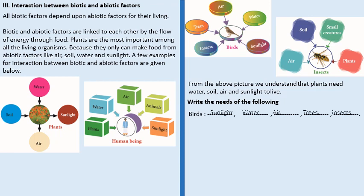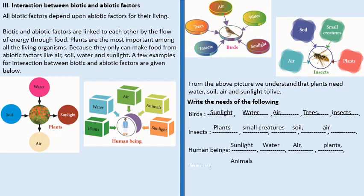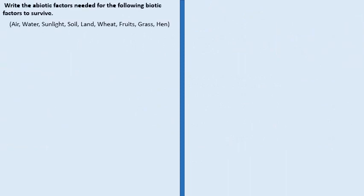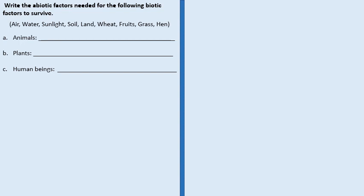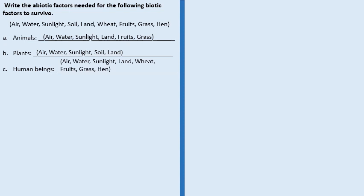Write the needs of the following. Birds use sunlight, water, air, trees and insects. Insects use plants, small creatures, soil and air. Human beings use sunlight, water, air, plants and animals. Now write the abiotic factors needed for the following biotic factors to survive. Animals use air, water, sunlight, land, fruit and grass. Plants use air, water, sunlight, soil and land. Human beings use air, water, sunlight, land, food, fruits and grass.